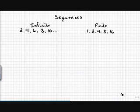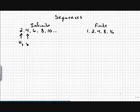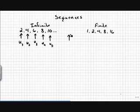Next, we're going to talk about sequence notation. We could use any letter to represent our sequence, but in this case we'll let our sequence be sequence u. The first term is u₁, the second term is u₂, the third term is u₃, u₄ is the fourth term, and u₅ is the fifth term.